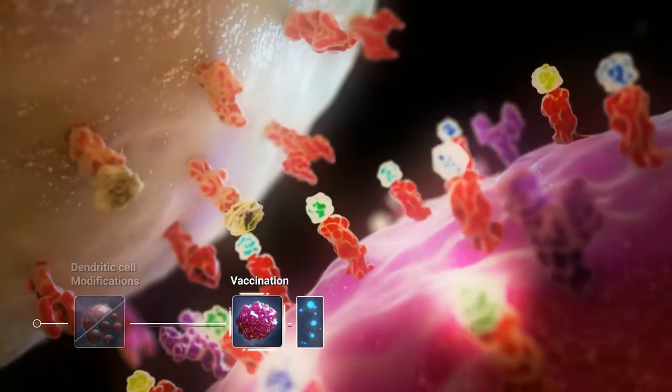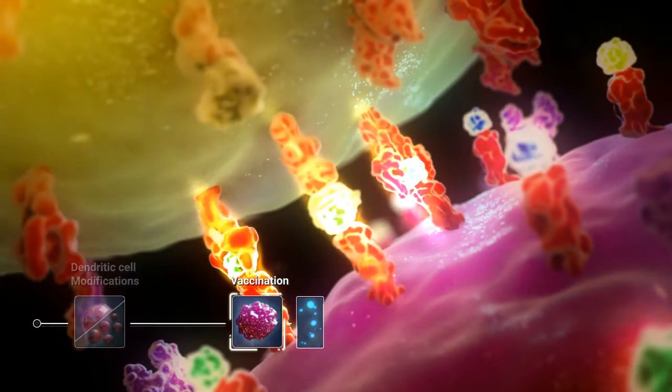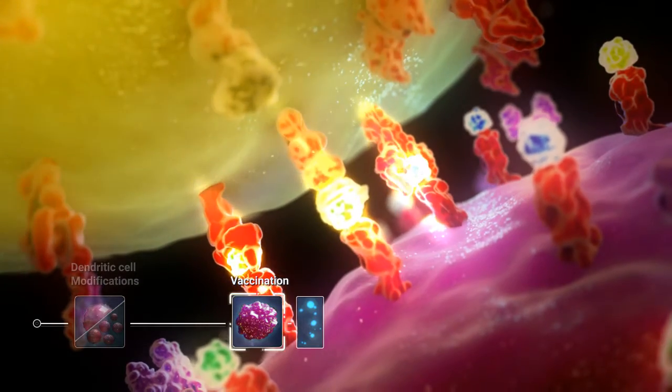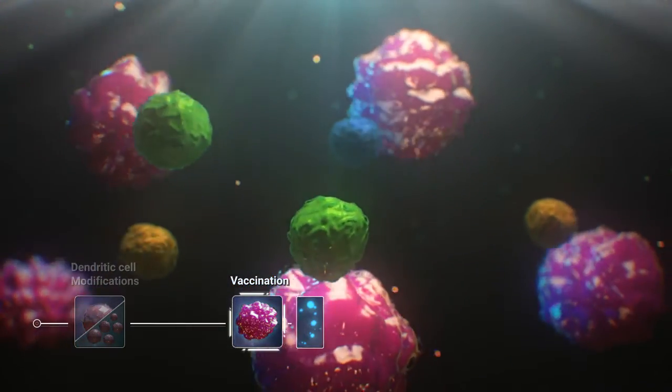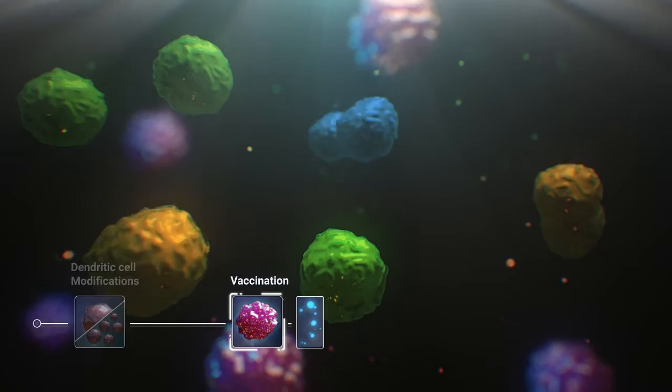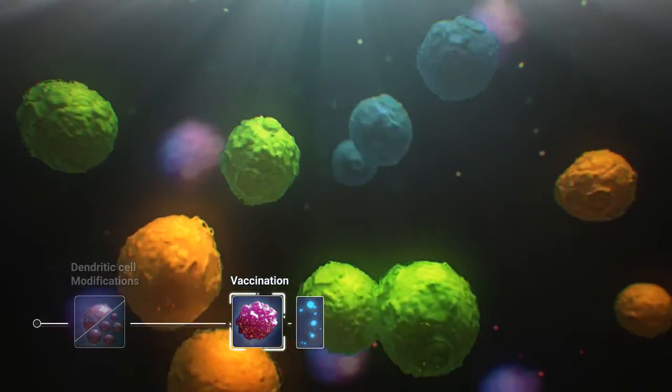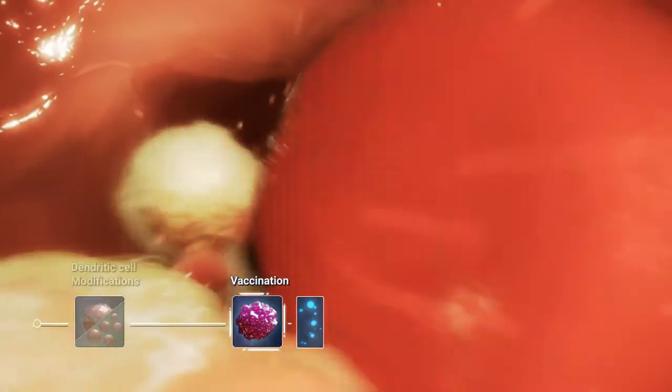The expression of full-length proteins in the dendritic cell vaccine allows stimulation of both helper T cells and cytotoxic T cells that distribute throughout the body. These cells will travel through the bloodstream and enter sites where tumor cells are present.